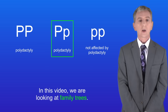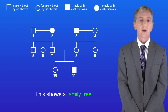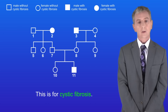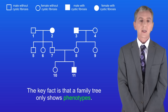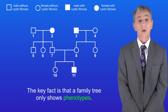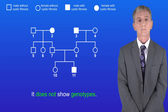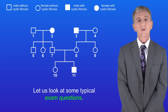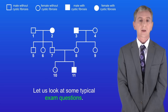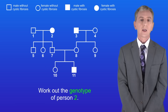So in this video we're looking at family trees. I'm showing you a family tree here — this is for cystic fibrosis. The key fact is that a family tree only shows phenotypes; it does not show genotypes.